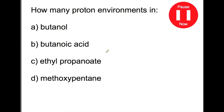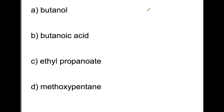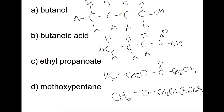Pause the video now and try and work out how many proton environments you'll find in each of these molecules. Let's start by drawing each molecule and then go back and have a look at the proton environments. In butanol, we'll have one proton environment for the CH3 here, another for these CH2s, another for these CH2s because they're joined to a slightly different carbon, another one for these CH2s, and then finally another one for the OH hydrogen.